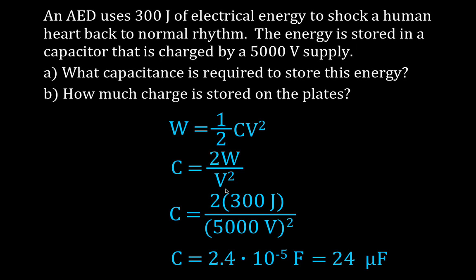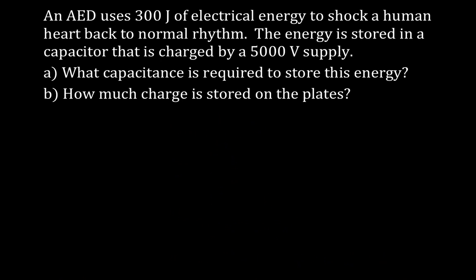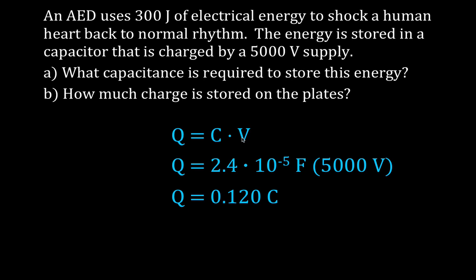That's 24 microfarads. 2.4 times 10 to the minus 5 farads is 24 microfarads. We want to know how much charge is stored. Now, we're going to use what I like to call the capacitor equation, Q equals C times V. We figured on the previous slide the capacitance is 2.4 times 10 to the minus 5 farads, so we're just going to plug that value in for the capacitance. C is for the capacitance, this is the charge, this is the voltage. We have a 5,000 volt source. And that tells us the amount of charge stored is 0.12 coulombs of charge.